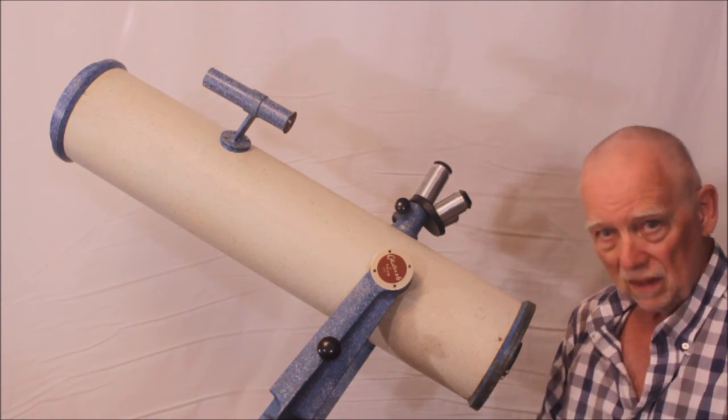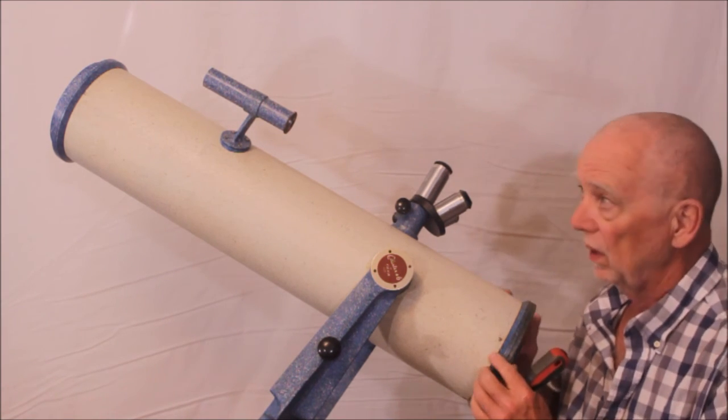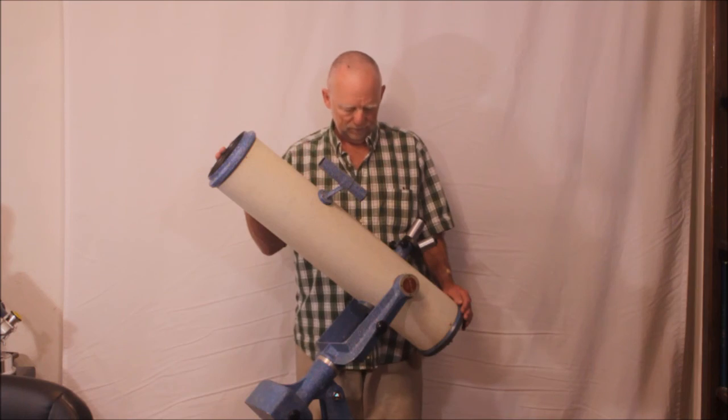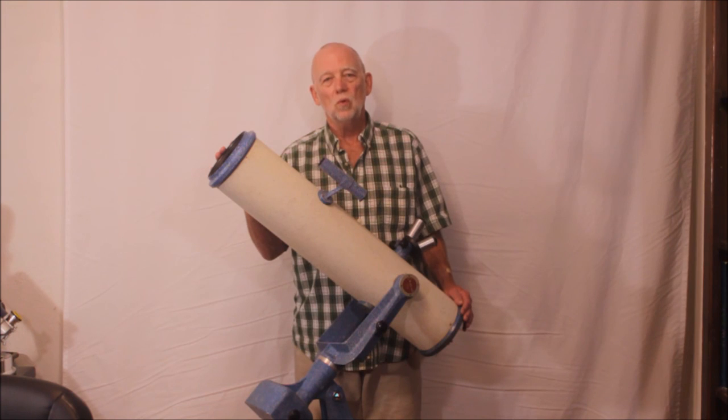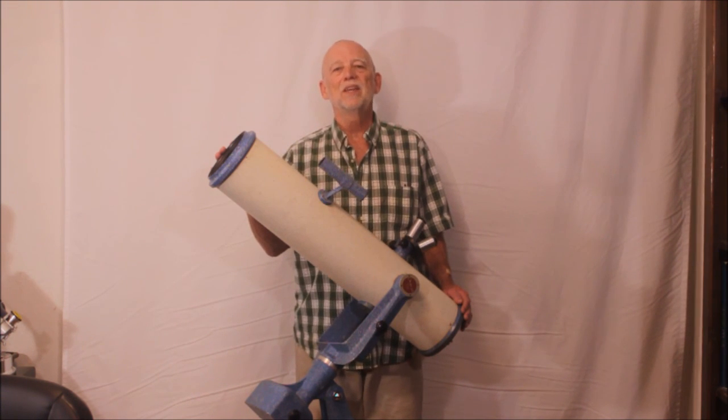And then in that case, you might have to recollimate. But I think once you get this collimated, it's not going anywhere. The thing is built like a tank. I hope you've enjoyed this tour of the Fekker Celestar 6 from the late 1950s. Thank you for watching.